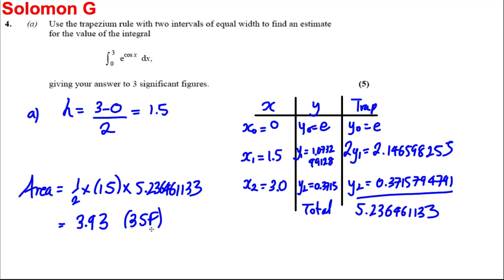I'm going to get myself 3.93 to three significant figures. And that is my approximation to that integral to three significant figures.